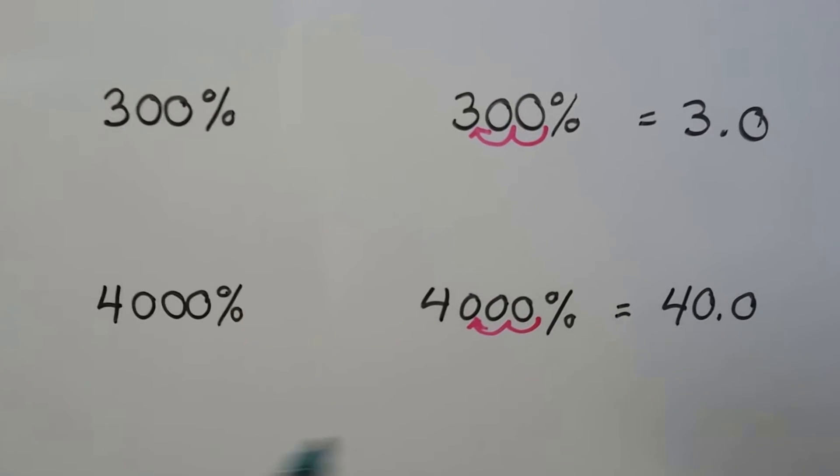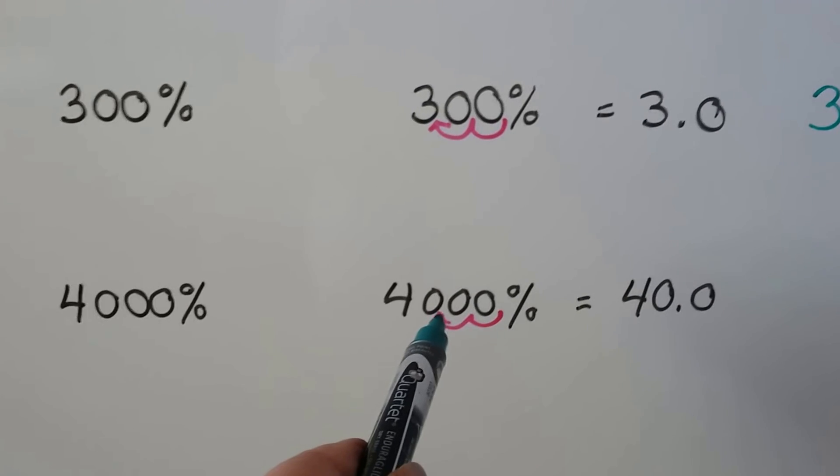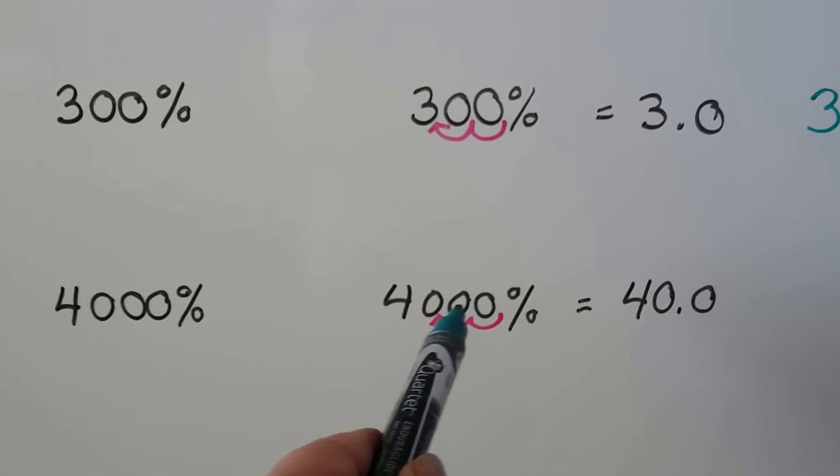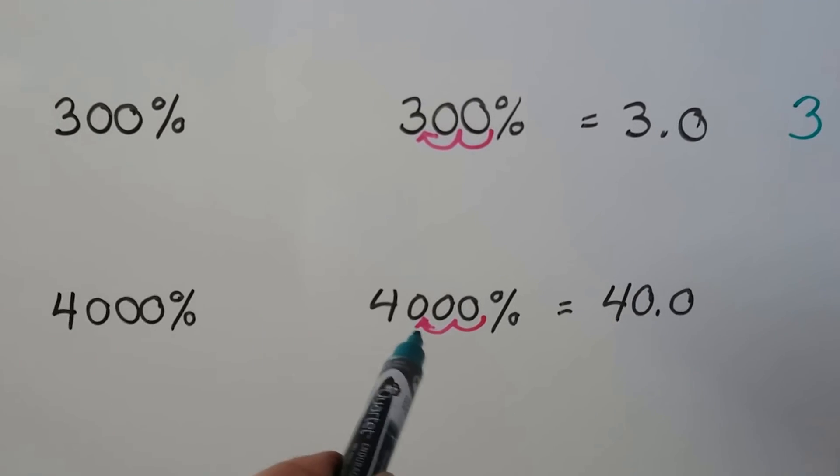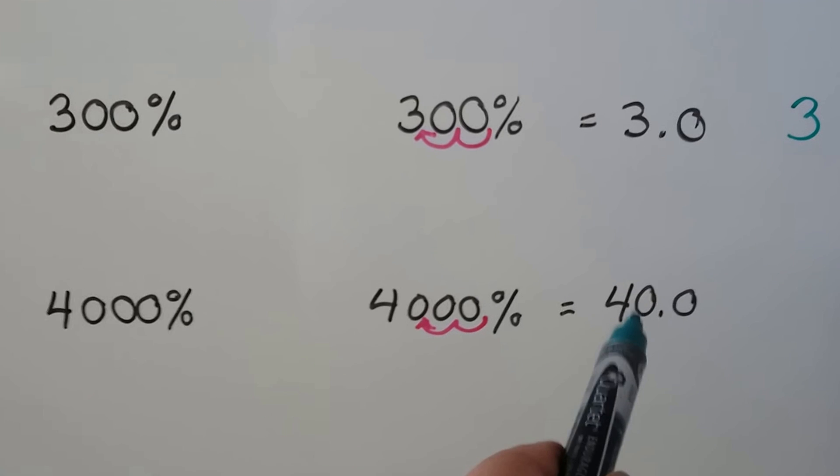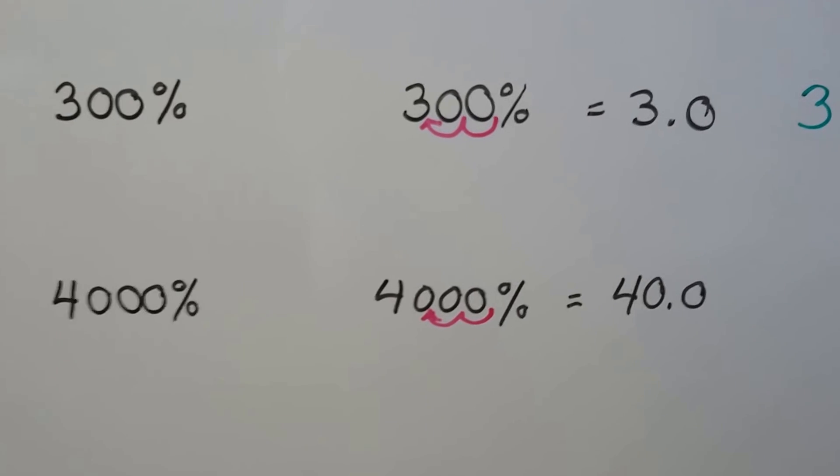For 4,000%, we do the same thing. We start with the percentage sign and go one, two hops. It's going to be in between this first and second zero. So that means we have 40. 4,000% is the same thing as 40. It can be written as 40.0. It just means there's no decimals.